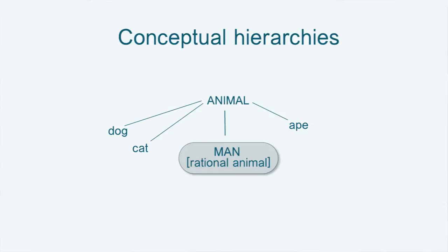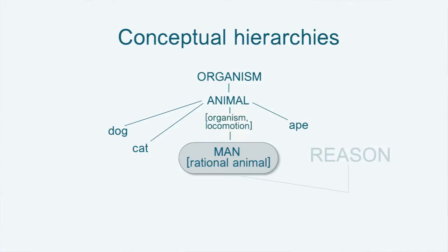This is where the concepts of 'organism' and 'locomotion' become relevant. 'Organism' is how we identify the broader class that grass, trees, and animals are in. And 'locomotion' — the ability to move around autonomously — is what animals have in common and what grass and trees don't. We also saw that to define 'man,' we needed to know what 'rational' means. We need the concept of reason — the concept of the rational faculty.